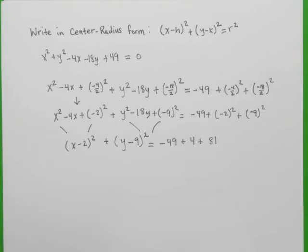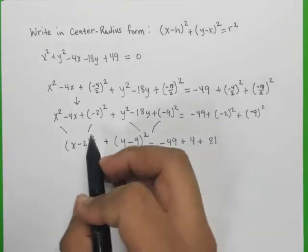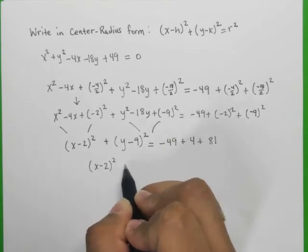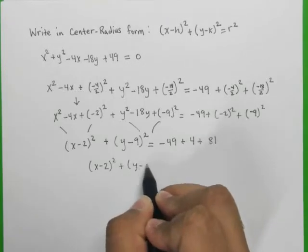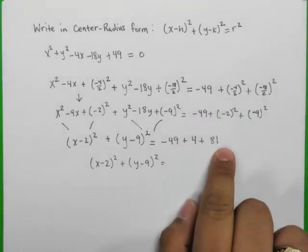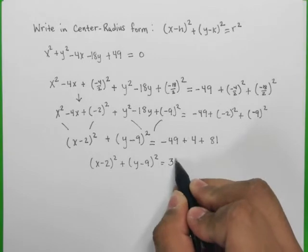So we have negative 49 plus 4 plus 81. So I think after completing the square, that part is probably the hardest part. So let's see what we get. So we have x minus 2 quantity square plus y minus 9 quantity square equals, and this right here, the sum of this, negative 49 plus 4 plus 81, is exactly 36.